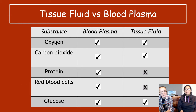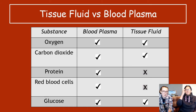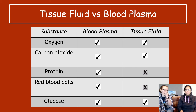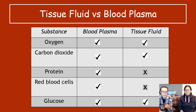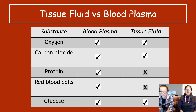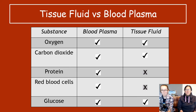Here's a useful comparison table — this often comes up as an exam question asking what substances are found in blood plasma but not in tissue fluid. Blood plasma contains oxygen, carbon dioxide, proteins, red blood cells, and glucose. Tissue fluid, once it's out of the blood vessel, still contains oxygen, carbon dioxide, and glucose, but proteins and red blood cells are not there — they stay inside the blood vessel. A common exam question is 'name a substance found in plasma but not in tissue fluid' — the answer is protein, since red blood cells are a cell type, not a substance.